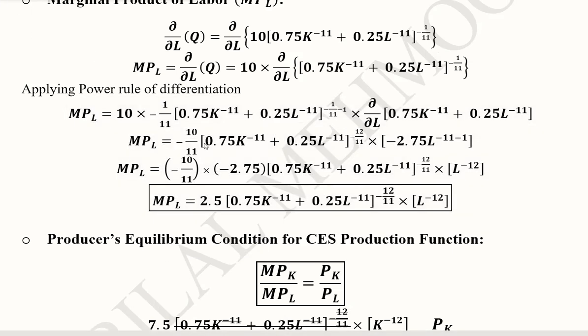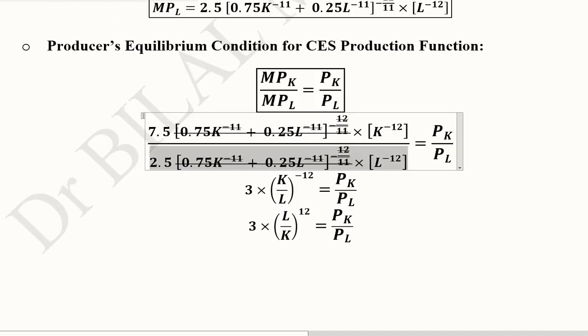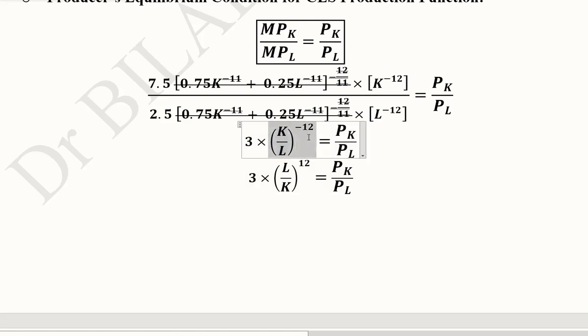Now we can easily find out the producer's equilibrium condition in case of CES production function because this is the condition in its general form. When we substitute the value of MPK here and MPL here, the cancellation will happen. A major part of this expression will be canceled out and we will be left with this expression.